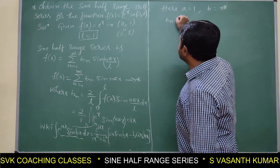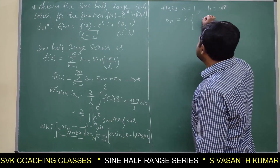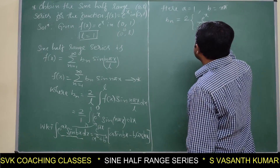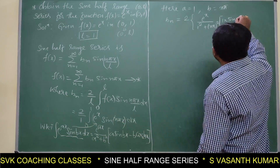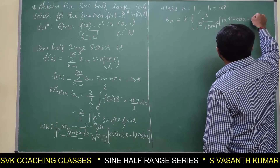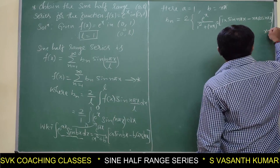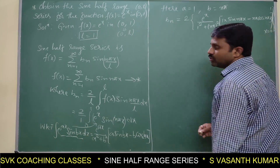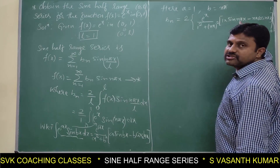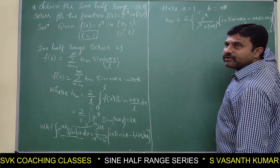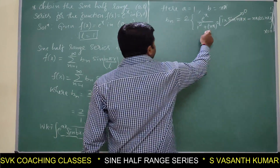Substituting, bn = 2 × [e^x/(1² + (nπ)²) · (1·sin(nπx) − nπ·cos(nπx))] from x=0 to x=1. Applying the limits: sin(nπ·1) = sin(nπ) = 0, and sin(0) = 0, so the sine terms vanish.